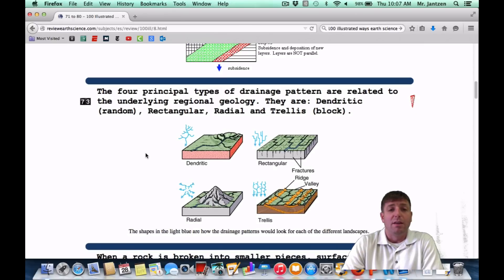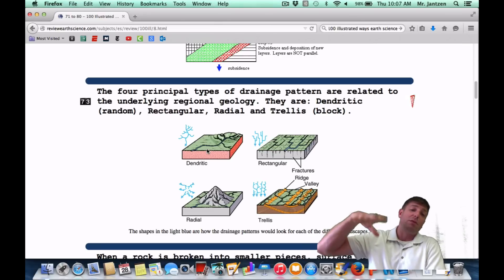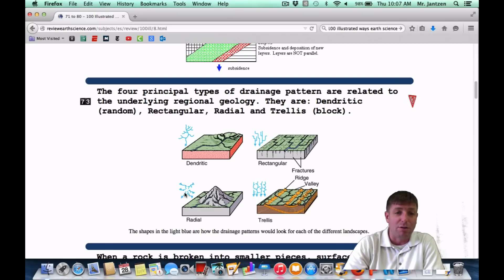Number 73, the four principal types of drainage patterns are related to underlying or regional geology. They are dendritic, rectangular, radial, and trellis pattern. So once again, it's almost like with these drainage patterns, you want to think of a bird's eye view. You're in a helicopter and you're looking down on the river. So you want to know what it looks like from a helicopter view.